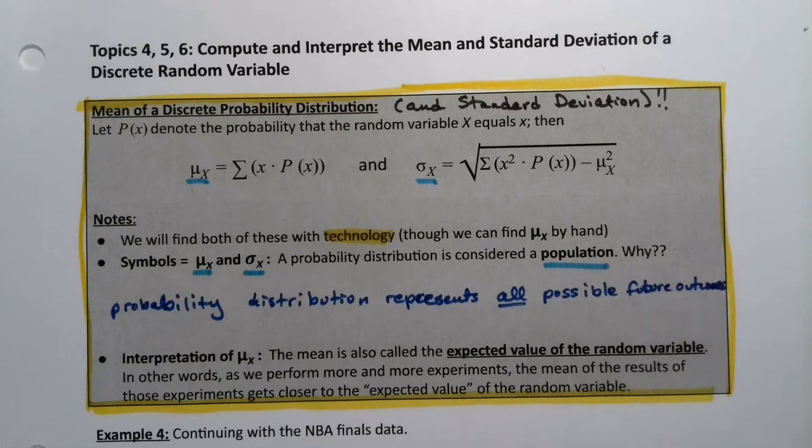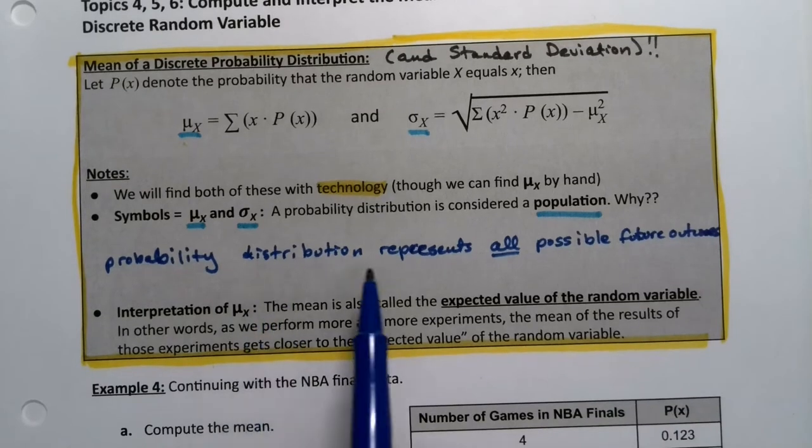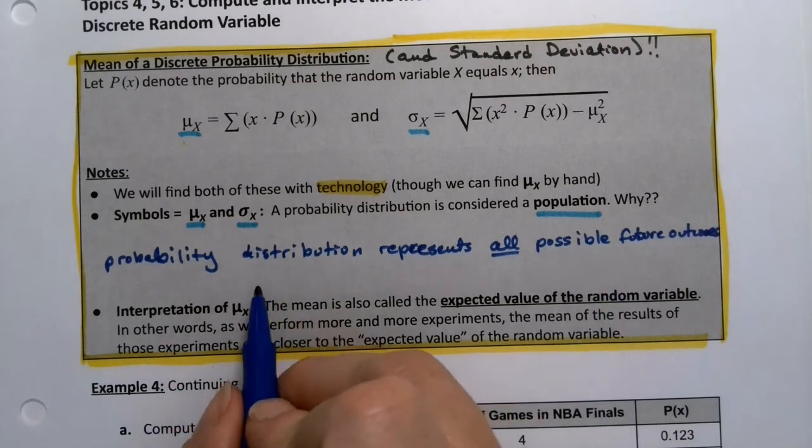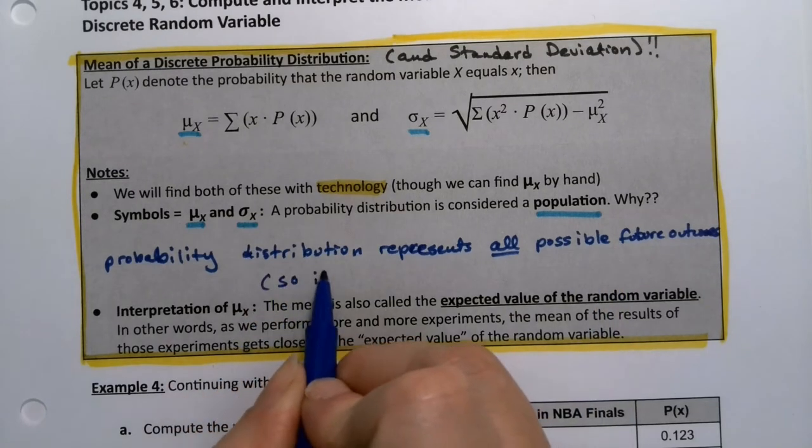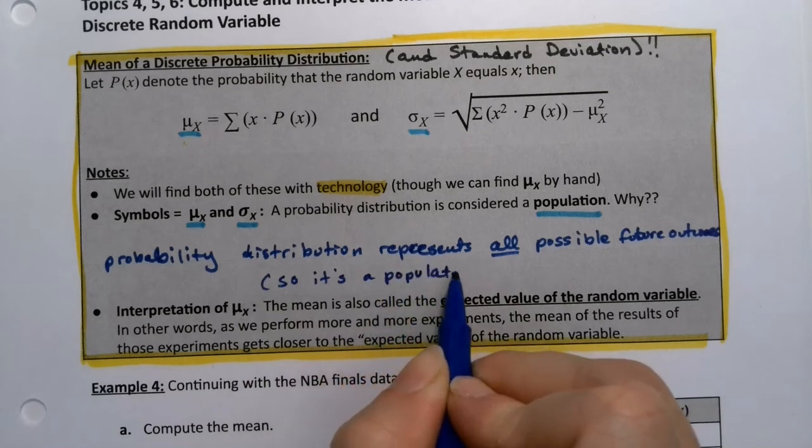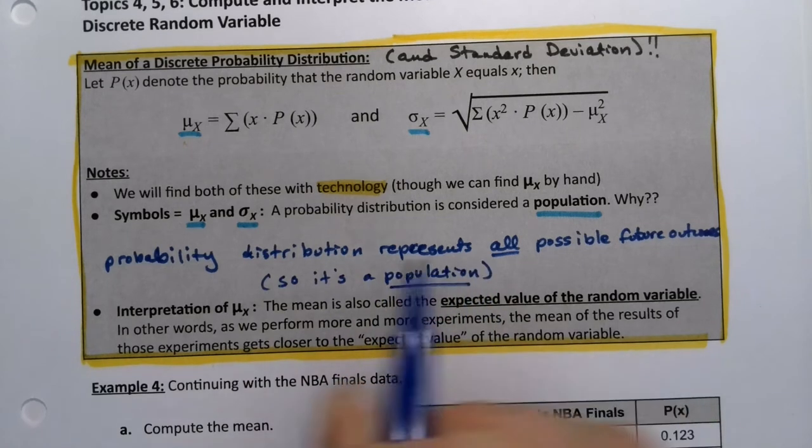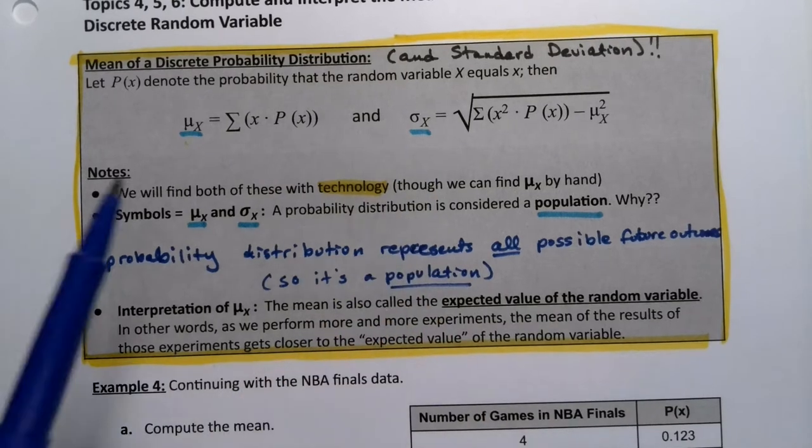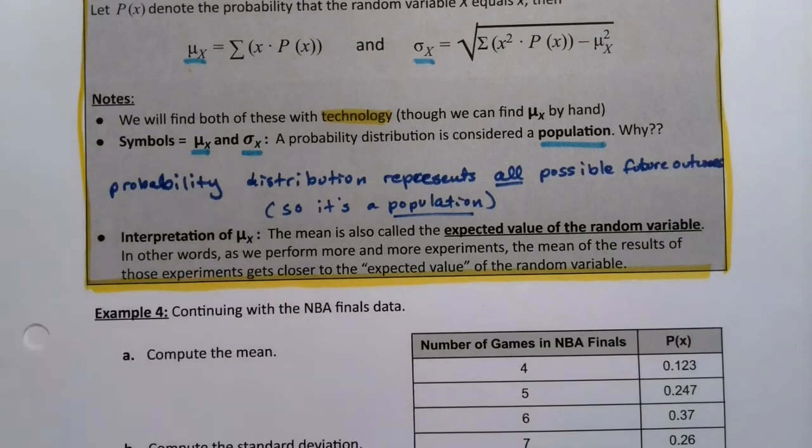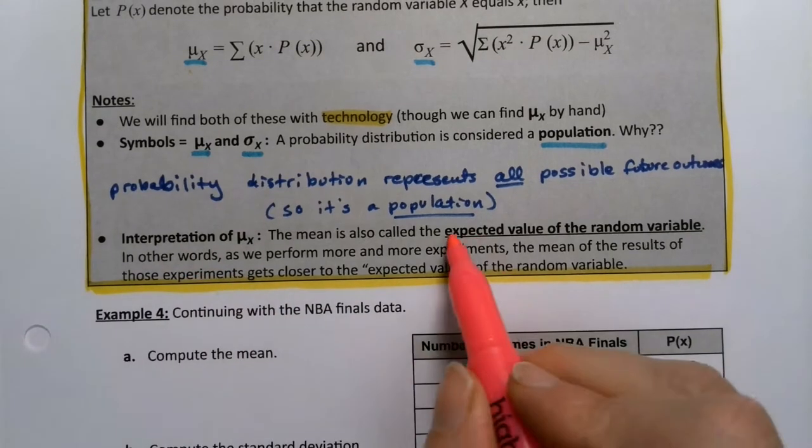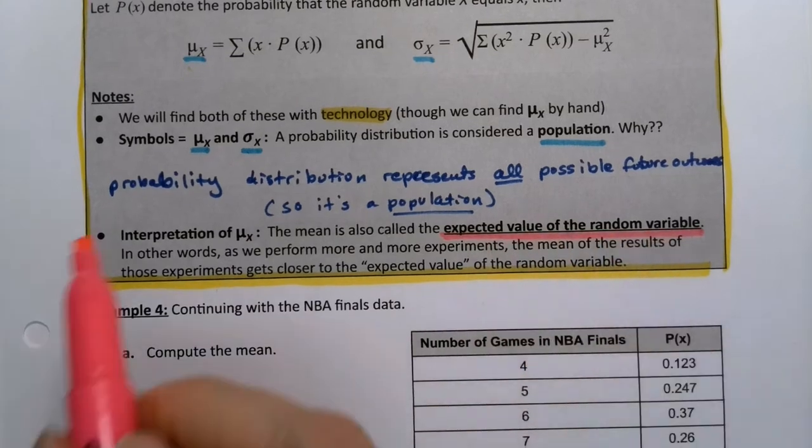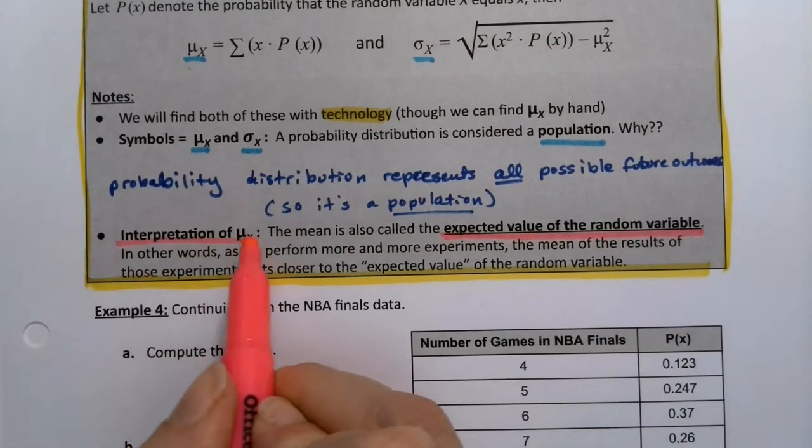So that means whenever we're working with a probability distribution, when we find the mean and the standard deviation, we will be using μ and σ. Now the μ is very important in its own right. It's called the expected value.